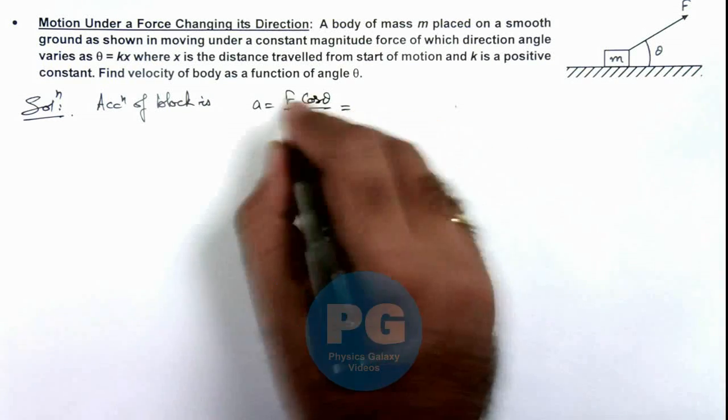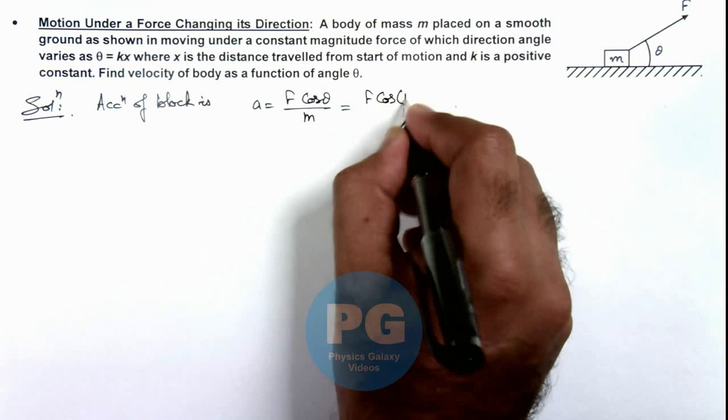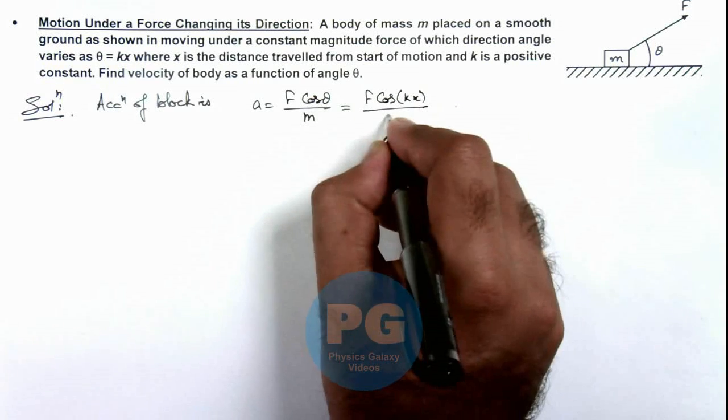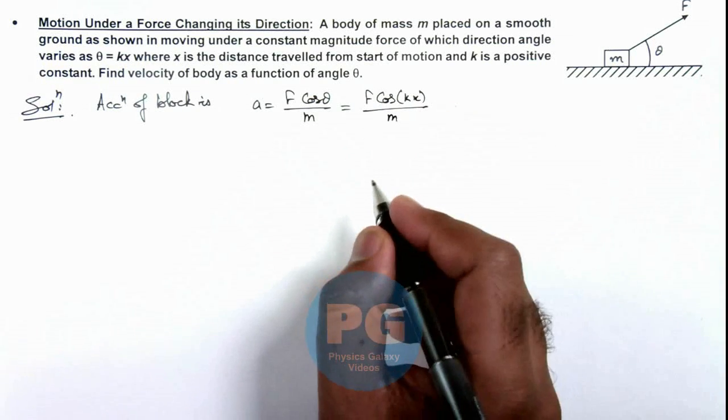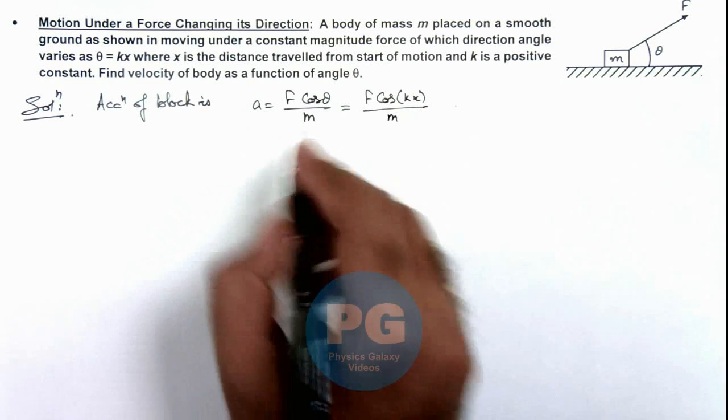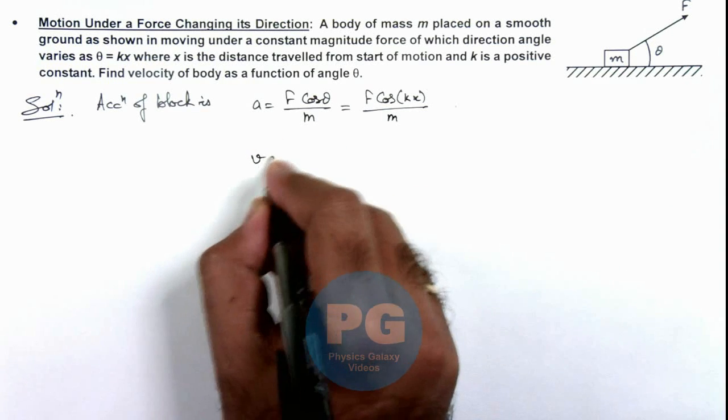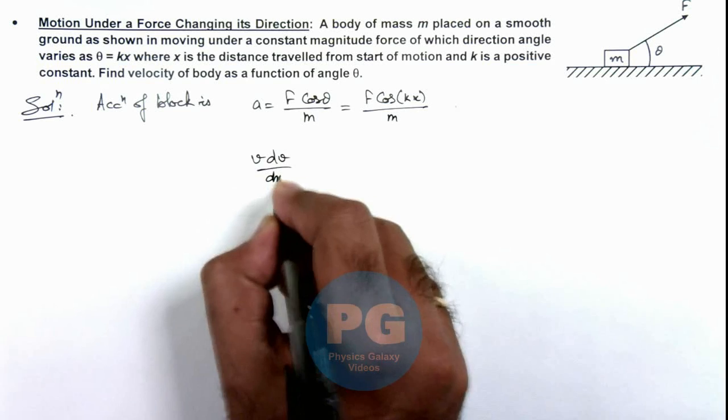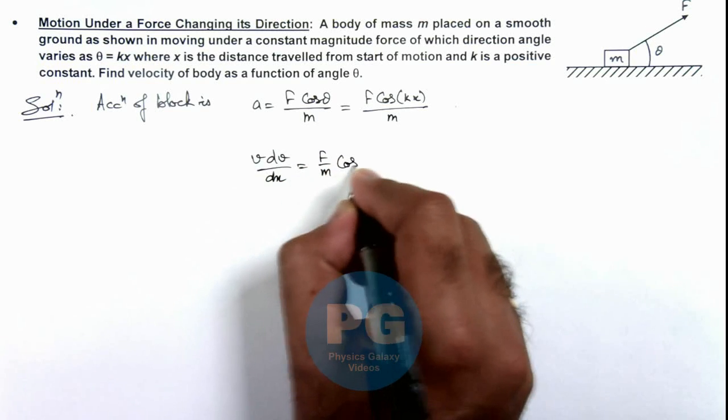And the value of theta we can write as kx, so it is f cos kx by m. And we can write acceleration as v dv by dx, which is f by m cos kx.